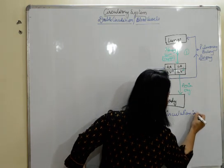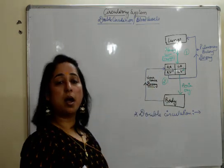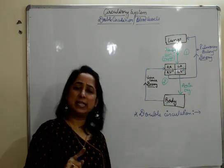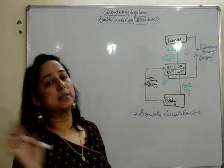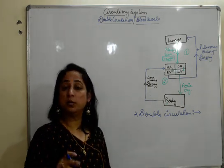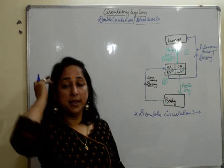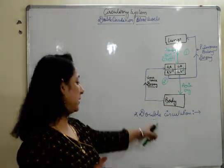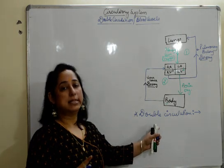So that is why we call the circulation of blood through the heart as double circulation. Why? Because the blood moves into the heart twice to complete one round. Blood moves to the heart twice, but that's it? No. You have to write to complete one round. Otherwise, your answer is incomplete. So the blood moves through the heart twice to complete one round that's known as double circulation.